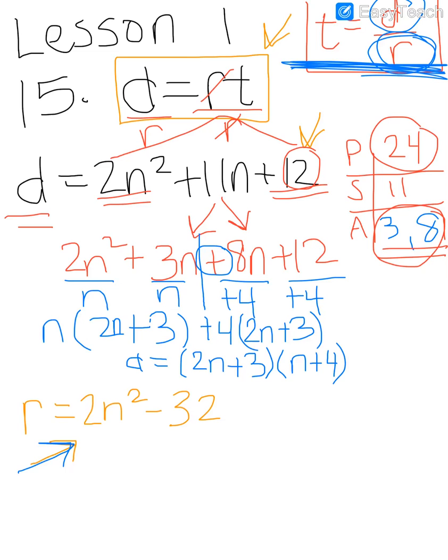So here's our r, 2n squared minus 32. So if I said, factor that, you'd say, I could GCF take a 2 out of there.